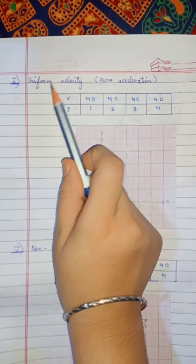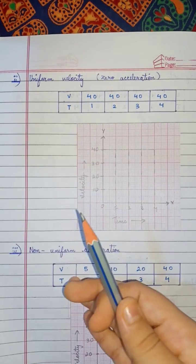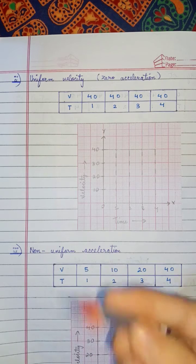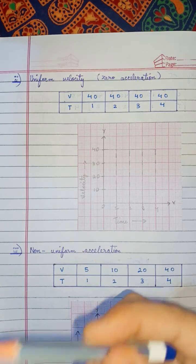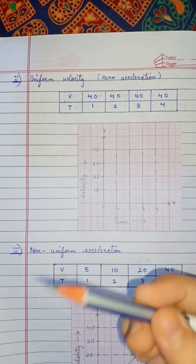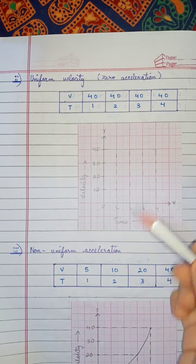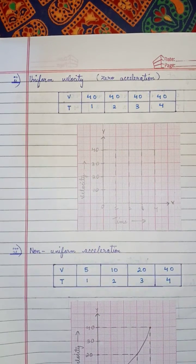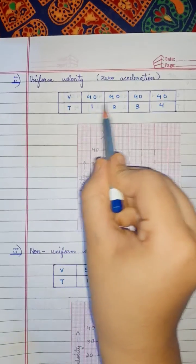So first of all, what is uniform velocity? Uniform velocity occurs when an object moves with the same velocity, meaning its acceleration is not changing at all. Therefore, the acceleration is zero.